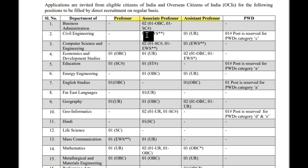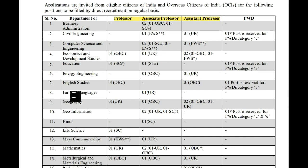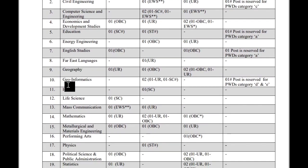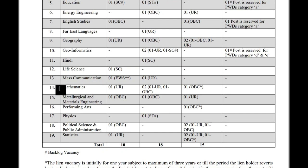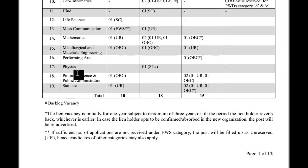Civil Engineering: Associate Professor — 1 post, Assistant Professor — 1 post. Similarly, other subjects include Computer Science and Engineering, Economics and Development Studies, Education, Energy Engineering, Energy Studies, Languages, Geography, Geoinformatics, Hindi, Life Science, Mass Communication, Mathematics, Metallurgical and Materials Engineering, Performing Arts, Physics, Political Science and Public Administration, and Statistics. Total: Professor — 10 posts, Associate Professor — 18 posts, Assistant Professor — 15 posts.